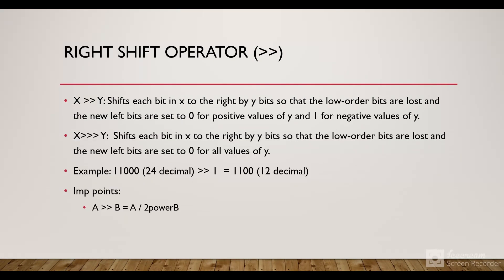And if I take the right shift operator now — the right shift operator has two representations: the double greater-than (>>) and triple greater-than (>>>) symbol. The double greater-than symbol shifts each bit in X to the right by Y bits so that the low order bits are lost. For example, if we take 24 in decimal and convert it to binary, it would be 11000. If we right shift this by 1, the answer would be 1100, that is 12 — so the number got divided by 2. When we do a left shift, the number gets multiplied by 2, and when we do a right shift, the number gets divided by 2.